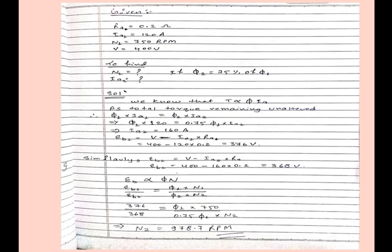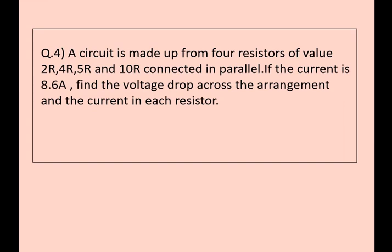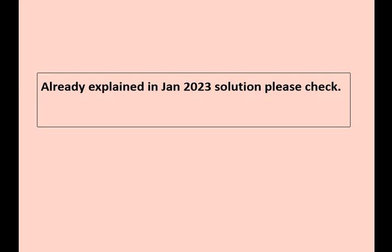Moving to next question. A circuit is made up of four resistors of value 2R, 4R, 5R, and 10R connected in parallel. If the current is 8.6 ampere, find the voltage drop across the arrangement and the current in each resistor. Very easy question, calculation is totally based on Ohm's law, and this question is already explained in January 2023 solution, please check playlist.